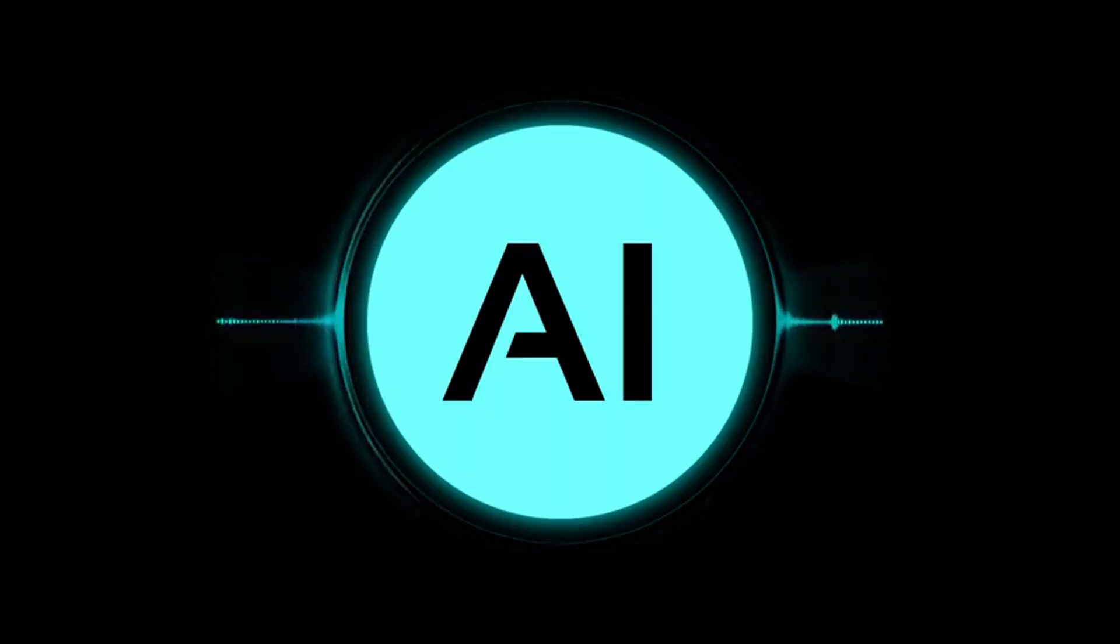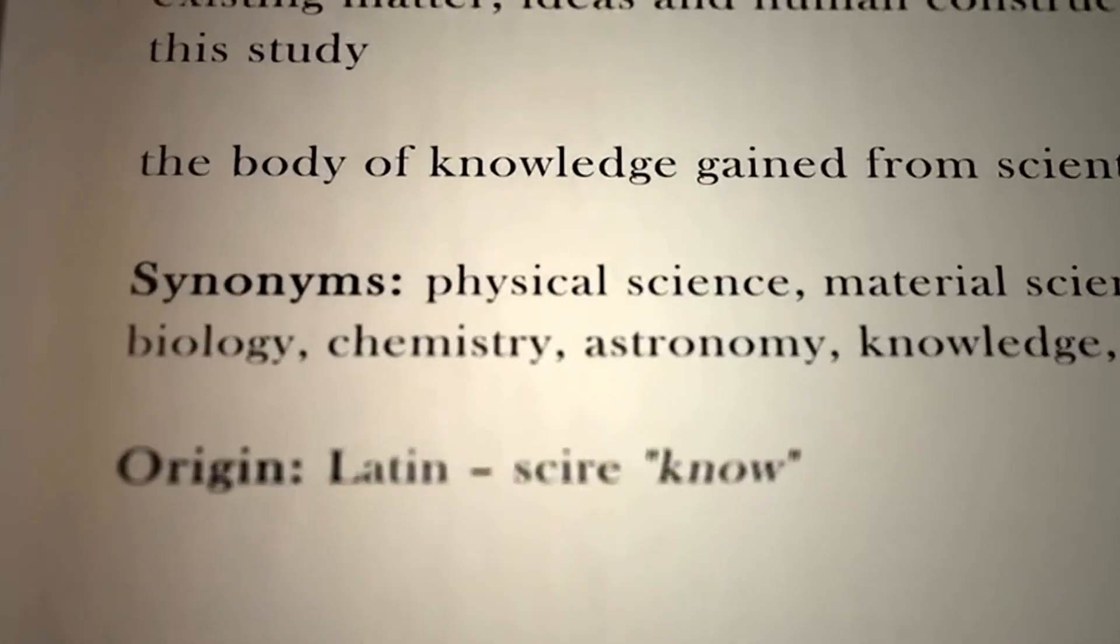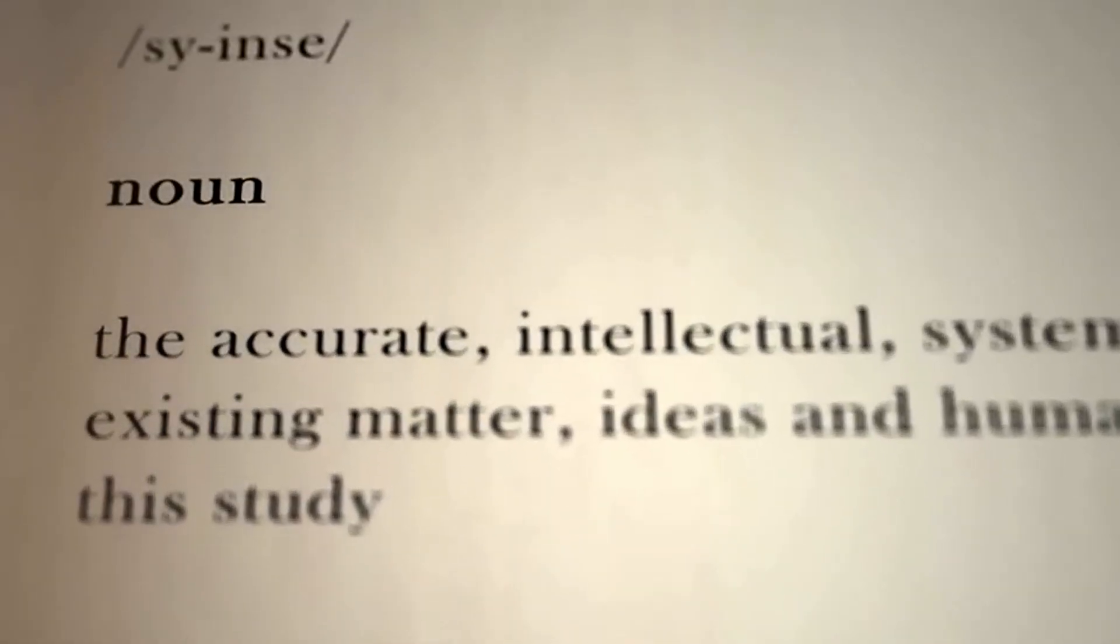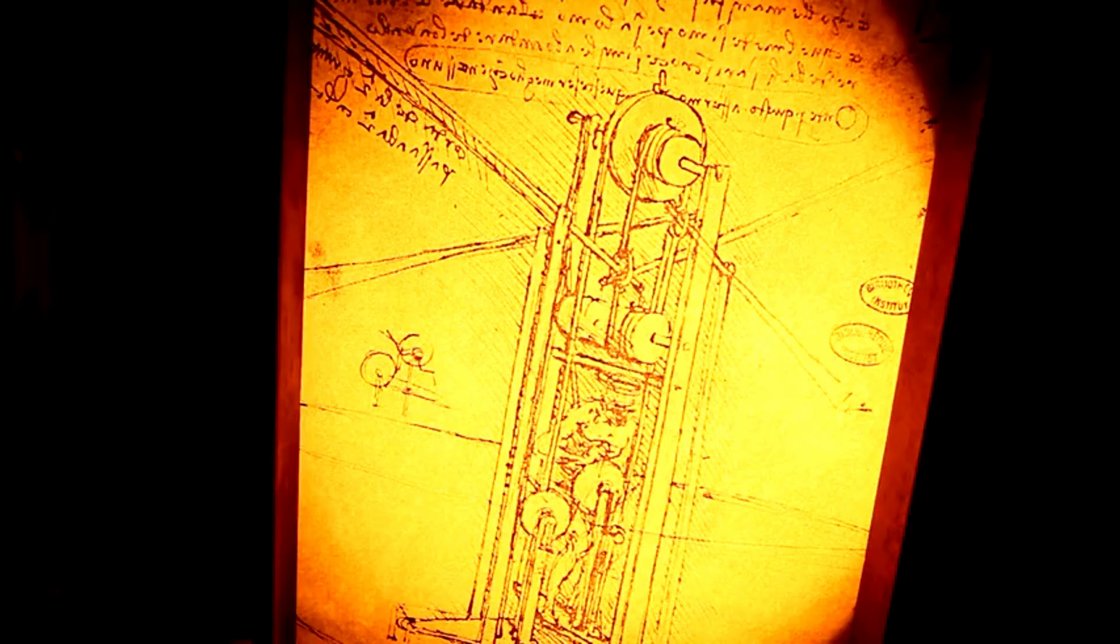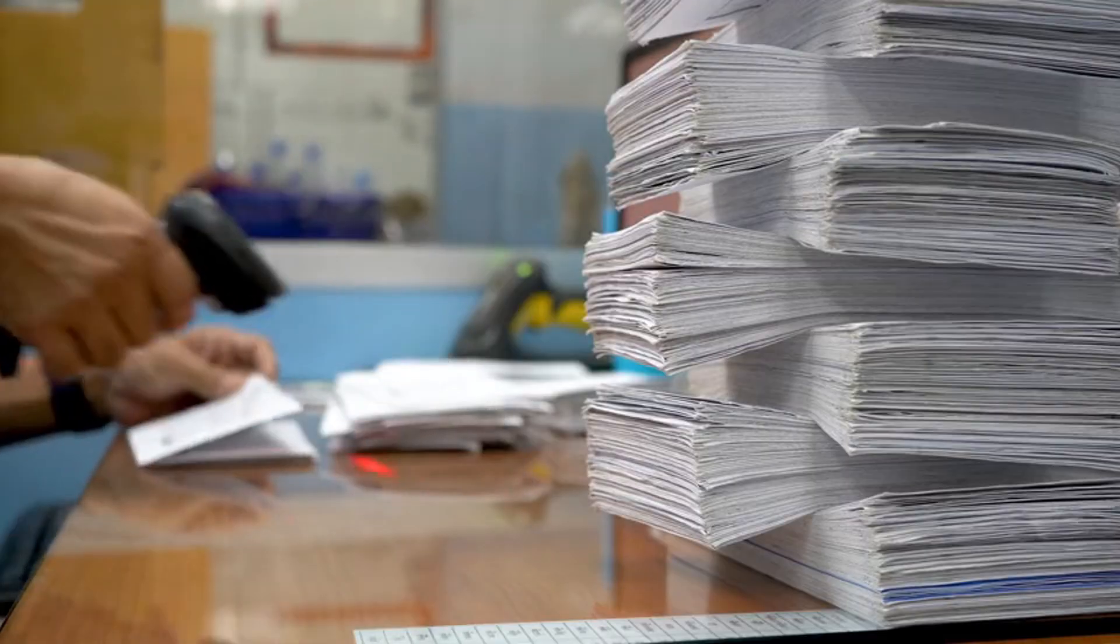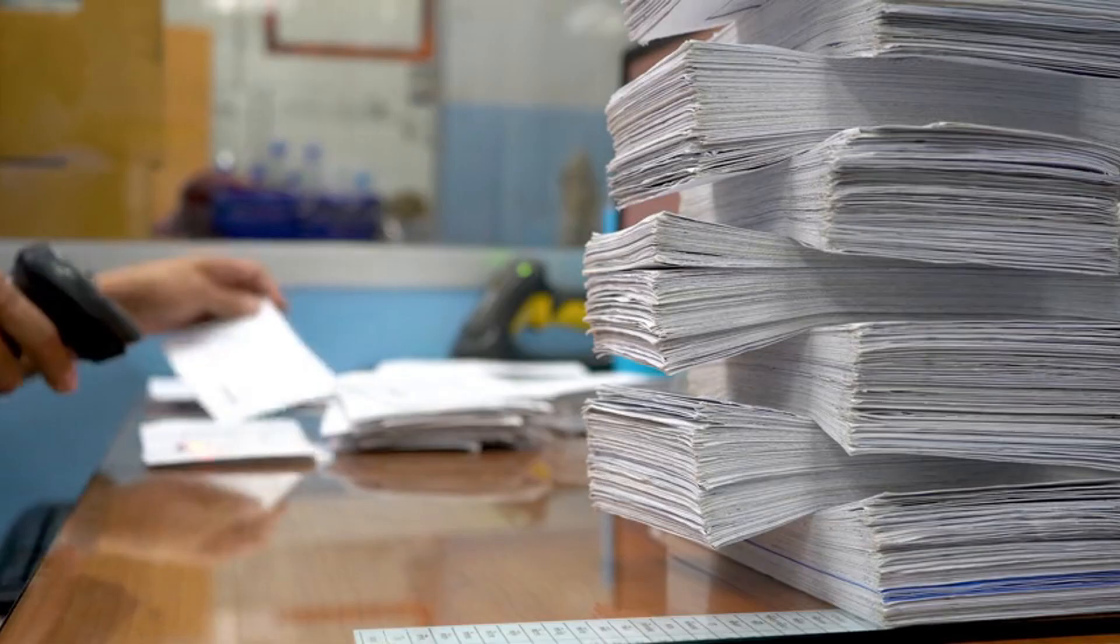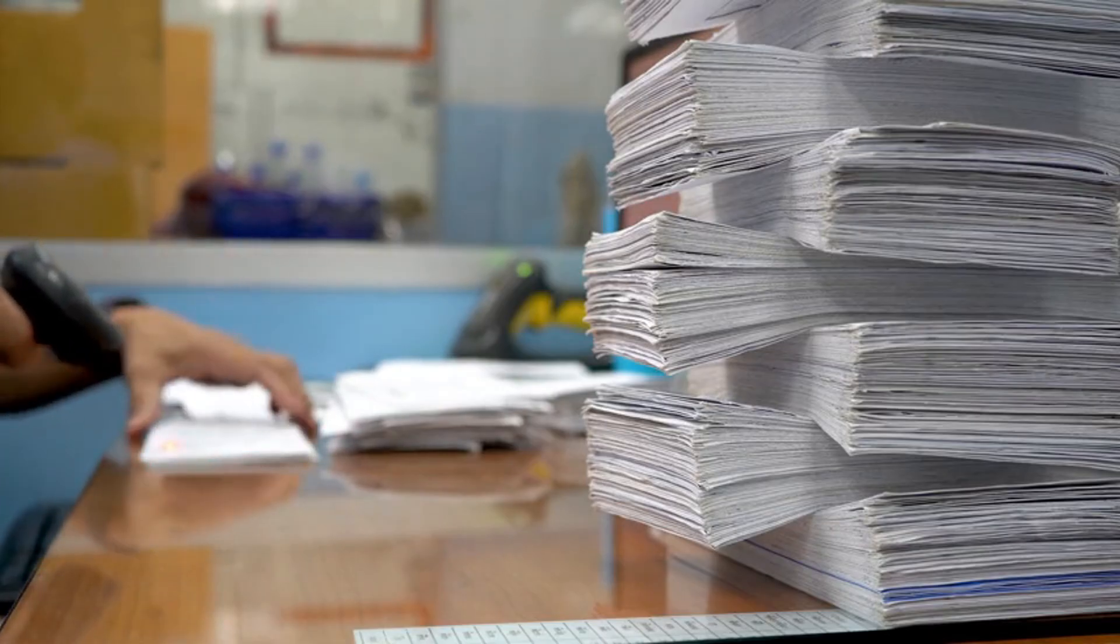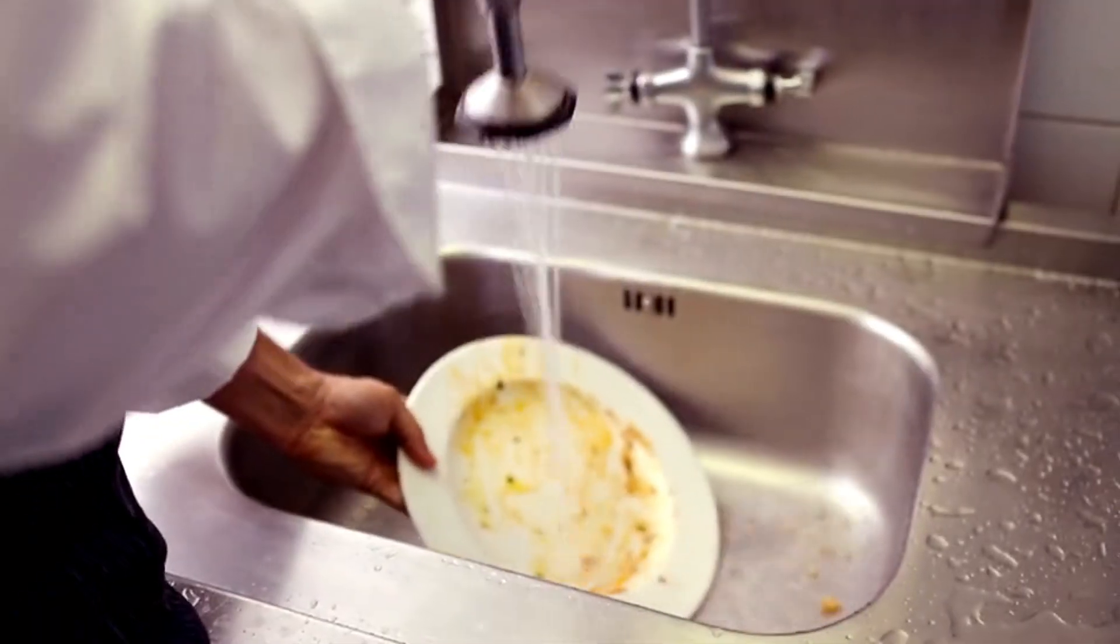A powerful AI called AI Scientist V2 didn't just support researchers, it acted as a scientist itself. On its own, it generated a scientific idea, designed experiments, carried them out, and even wrote a full research paper based on its findings. What's more shocking? The paper was reviewed by human experts who had no clue it was written by a machine and they rated it higher than nearly half of the papers submitted by real scientists.